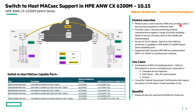A brief introduction about MACsec: on Ethernet links, MACsec offers layer 2 hop-by-hop encryption. It offers layer 2 security, shielding the network communication from various threats such as man-in-the-middle, eavesdropping, and denial of service attacks.